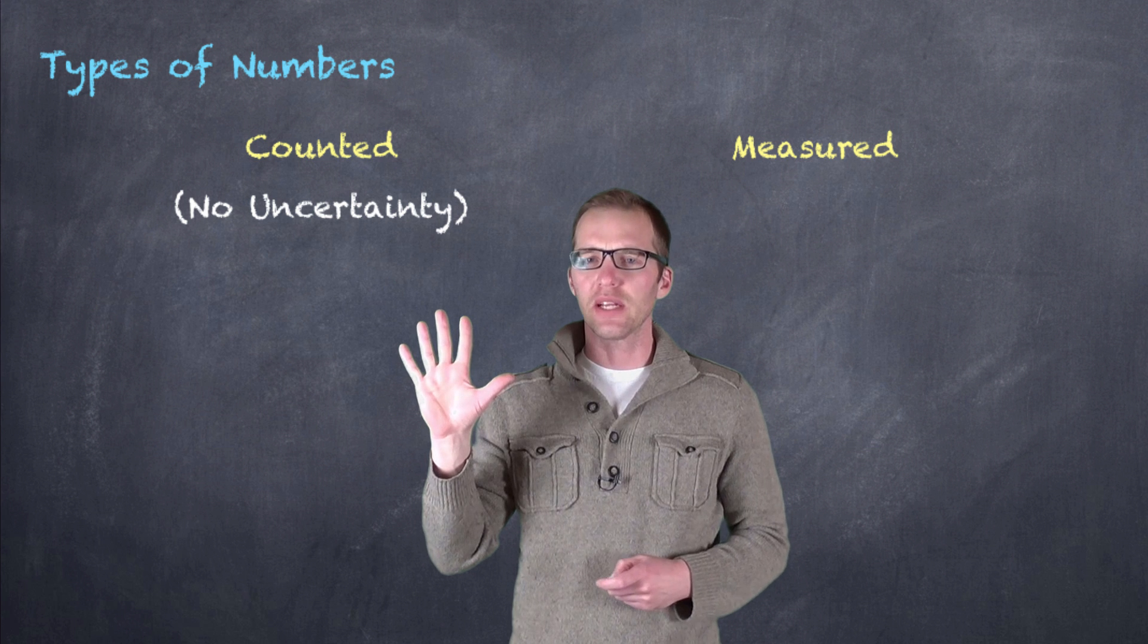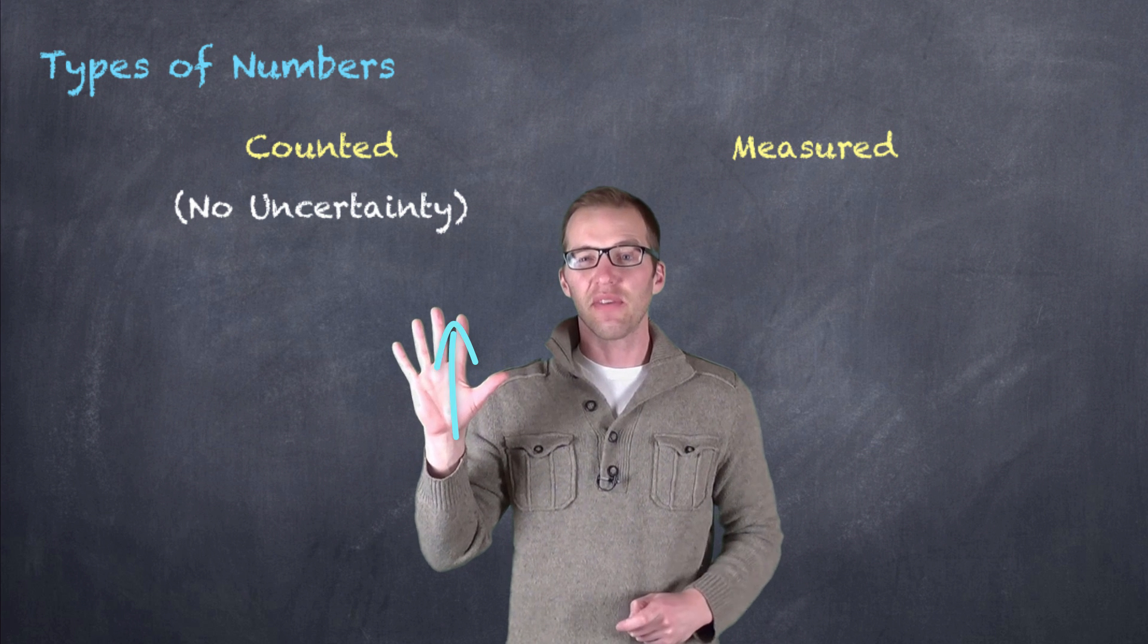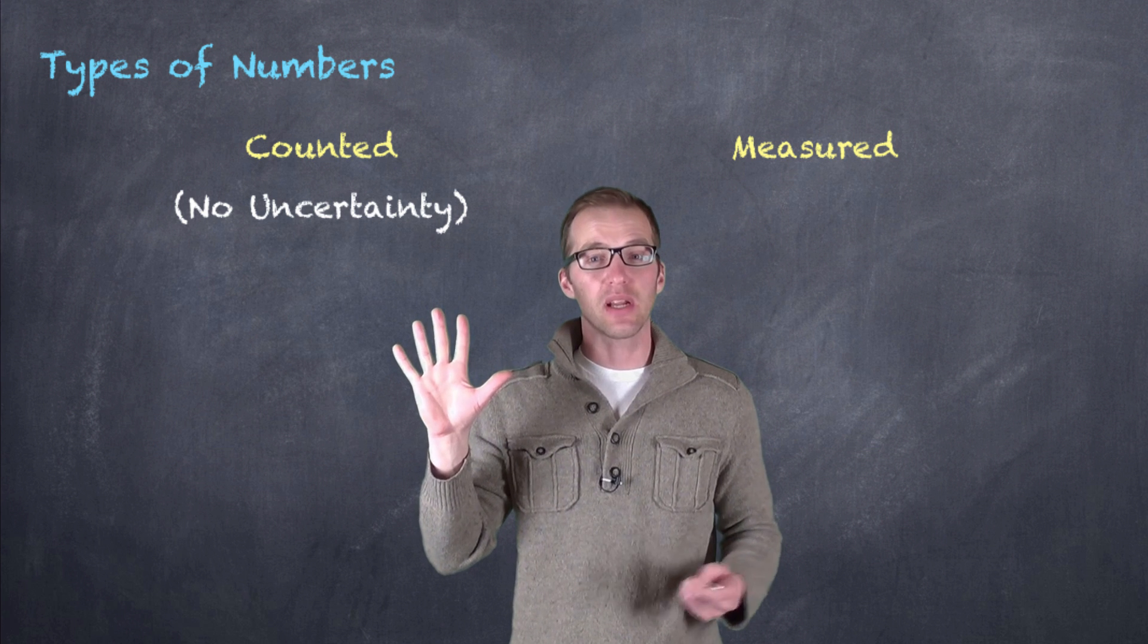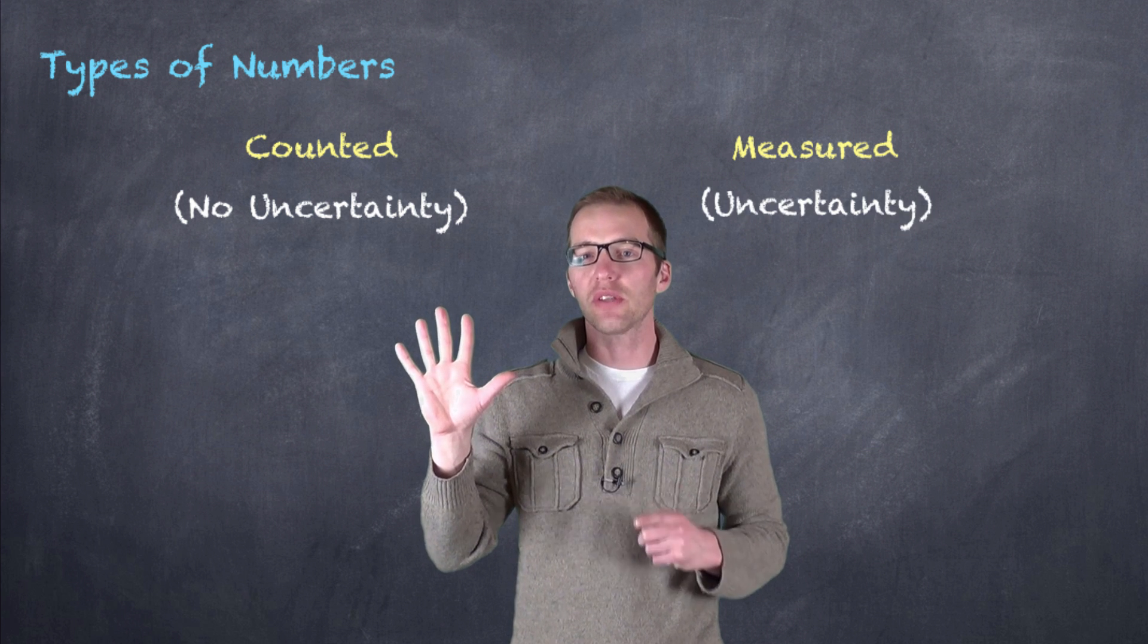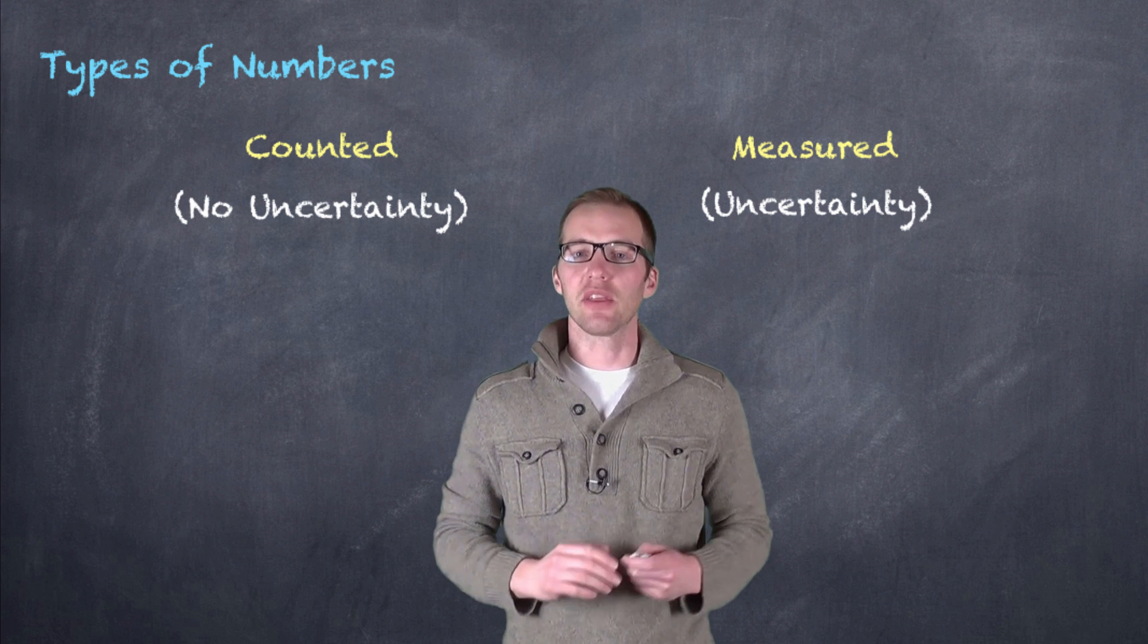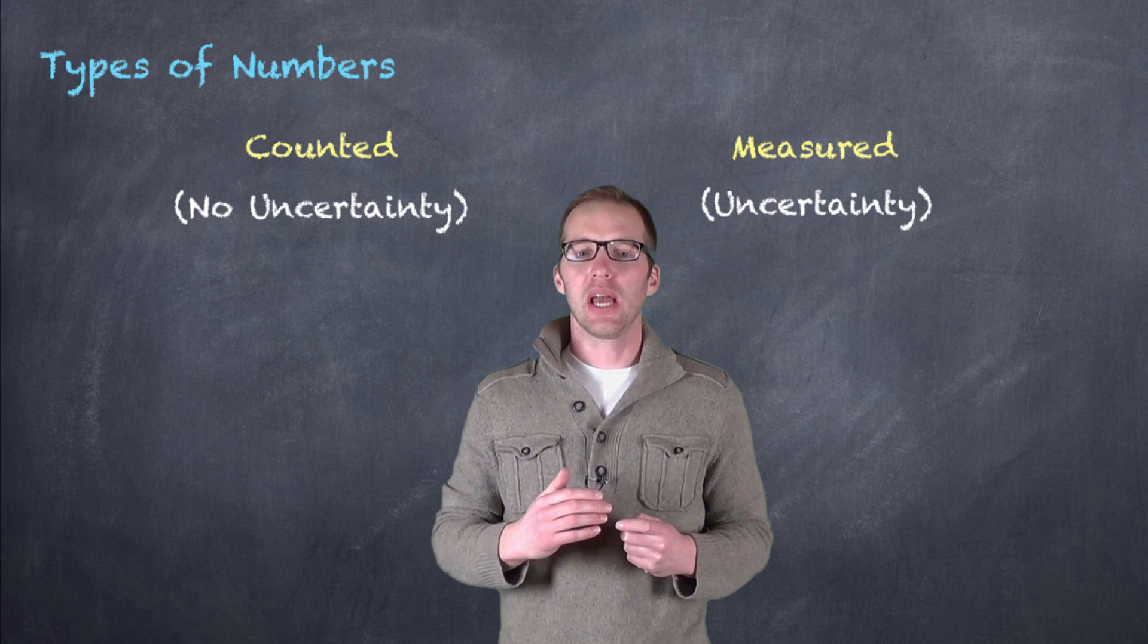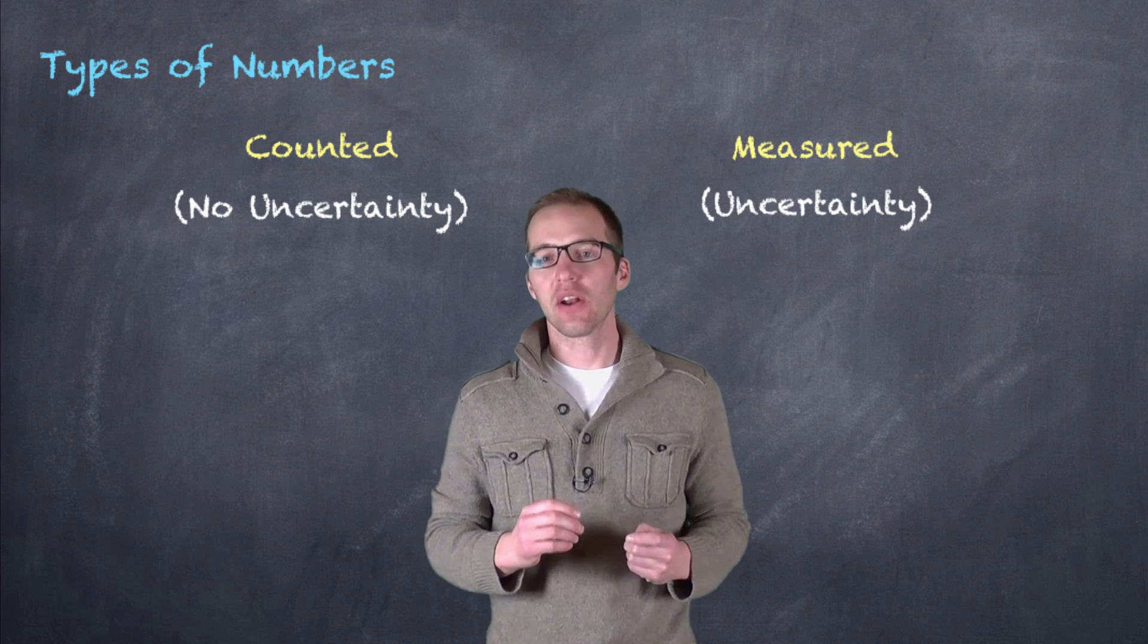If I was to measure my hand, though, let's say from the base of my palm all the way to the tip of my middle finger, it would depend on the device that I'm using. I could be using a ruler that measures to centimeters or millimeters, and even then there's going to be some degree of uncertainty. So there's always some degree of estimation or uncertainty when we're measuring something. We typically say that all of these measured quantities possess some certain digits, those values that we are certain it is at least that much, and one estimated or uncertain digit. That's the last digit that we have in our measurements.